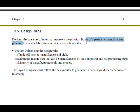The wafer fabrication vendor defines the set of design rules. For example, if you have a CMOS process fabricated by vendor A, then vendor A would produce a set of design rules suitable for his process. Similarly, if you have another vendor, let's call him vendor B, he also has a CMOS process and will create a set of design rules suitable for his CMOS process.